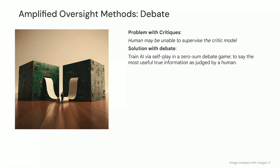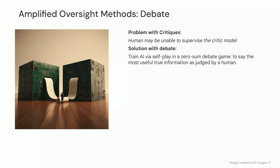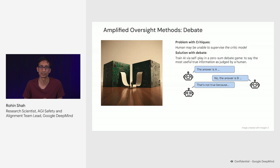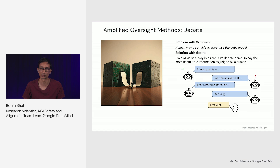Concretely, we train an AI system via self-play in a zero-sum debate game, and at the end of the debate, a human will judge which of the debaters provided the most true and useful information, and provide rewards based on that. For example, the first debater might claim that the answer to the user's question is A, the opposing debater might say no, the answer is B and give some reasons for that, and then the first debater responds and says no, that's not true, there are some other reasons, and this debate continues. Eventually, it gets down to something in which a human has an easier time judging, and is able to say that the left debater wins, in which case that left debater gets a reward of plus one, and the right debater gets a reward of minus one.